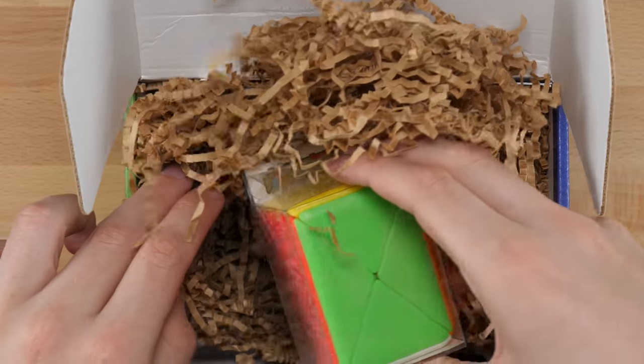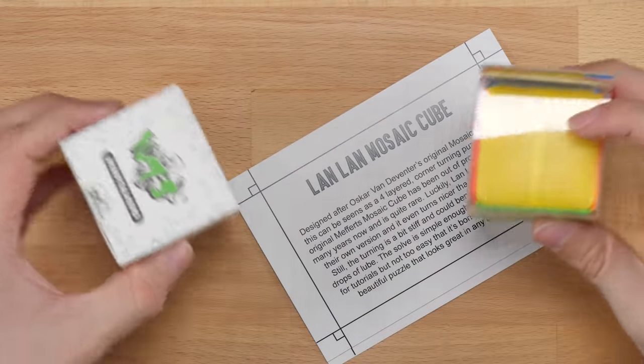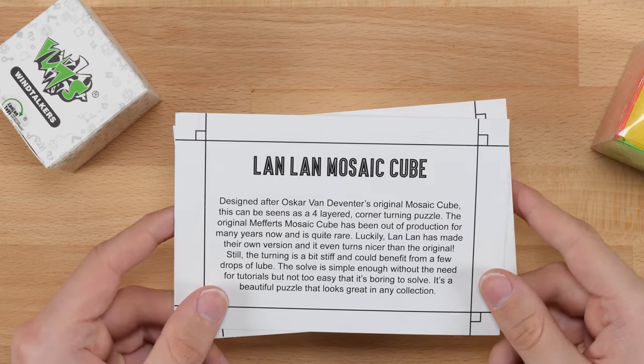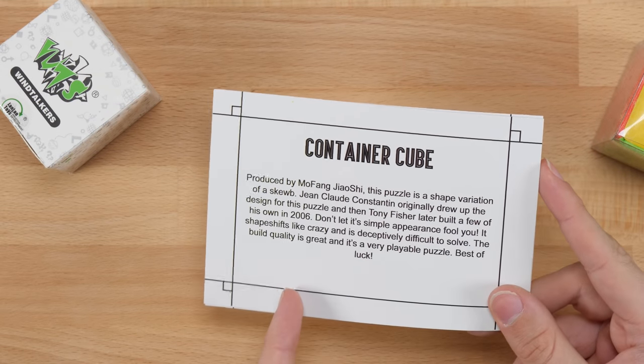We've got two puzzles this time. So these are the two puzzles. We have the Lan Lan Mosaic Cube and the Container Cube. So let's go ahead and start with this one.